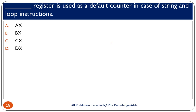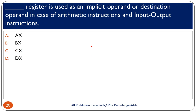Which register is used as a default counter? CX is generally used to store the count value. Which register is used as an implicit operand or destination operand in arithmetic and input/output instructions? The correct option is DX, and generally when performing multiplication and division, the DX register is used in most cases.